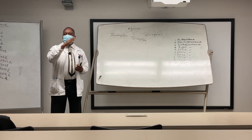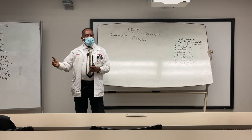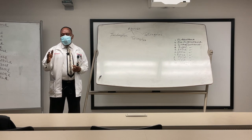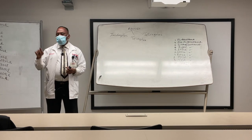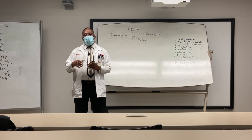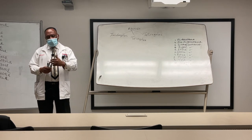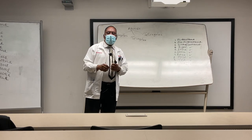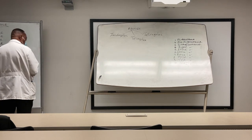The dosing for oteseconazole: on day one, use four capsules — 600 mg. On day two, use three capsules — 450 mg. Then on day 14, you begin a once-weekly dosage of 150 mg, continuing through week 11. So: day one, four capsules; day two, three capsules; two weeks from day one, start once-weekly dosing, and continue from week two all the way to week 11.